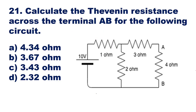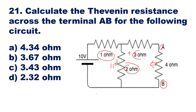Question number 21: Calculate the Thevenin's resistance across terminal AB for the following circuit. Here we see terminal A and terminal B at the output. From this point, looking inside the circuit, we have to calculate the Thevenin's resistance RTH.